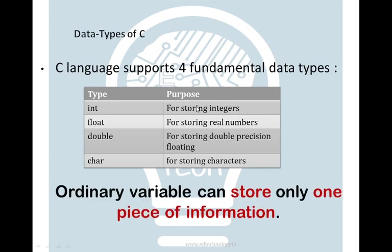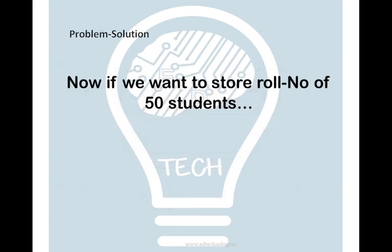But can this actually store more information? The answer is no. Ordinary variable can store only one piece of information, which is either integer, float, double or character. Now if we want to store roll number of 50 students, we have an array. So solution is there.